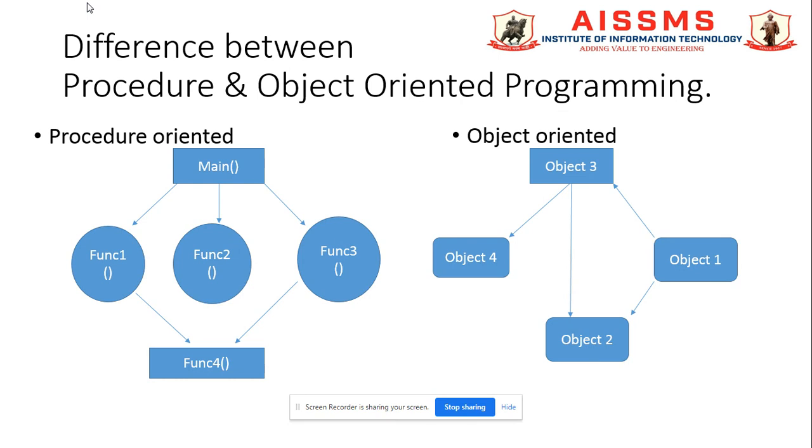Mostly in procedure-oriented, the top-down approach design concept is available. In object-oriented, bottom-up or top-down, both concepts are used for designing. Last difference between these two: in procedure-oriented, data is exchanged between procedures under control of a main program. When we discuss object-oriented programming, objects exchange messages with each other.